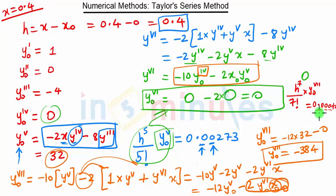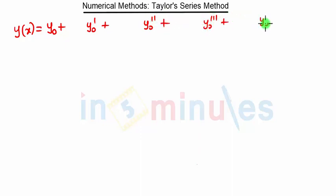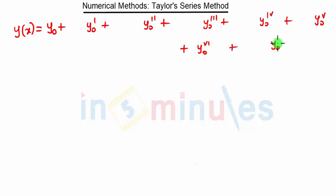Now we can apply the Taylor series. According to the Taylor series, y(x) is nothing but y0 plus y0' plus y0'' plus y0''' plus y0 fourth derivative plus y0 fifth derivative plus y0 sixth derivative plus y0 seventh derivative, because we need up to four decimal places, that's why we are going till the seventh derivative.